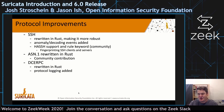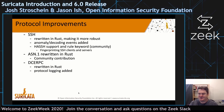We always try to improve our existing protocol support as well. SSH was rewritten in Rust, and we added anomaly and decoding events to it. Support came from the community for the HASSH keyword hashing, which is basically fingerprinting of SSH clients and servers for identifying specific implementations. ASN.1 was also rewritten in Rust — a community contribution. And DCERPC was rewritten in Rust, gaining the new feature of being able to log the protocol data.